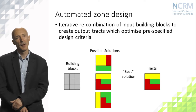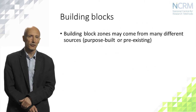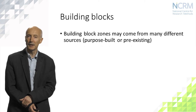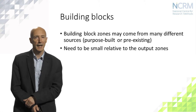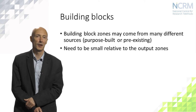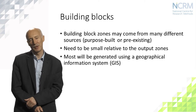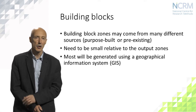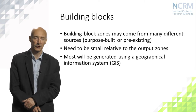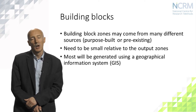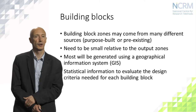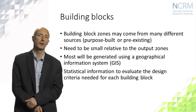Building block zones may come from many different sources and in different applications may need to be purpose-built or may already exist. They need to be small relative to the output zones, in the same way that jigsaw pieces are small relative to the elements of the picture. In most contexts these will be zones from a geographic information system, though you do not need to be a GIS expert to use automated zone design. All statistical information relevant to the design criteria must be available for each building block — for example, if population size is important, we must know the population of each block.